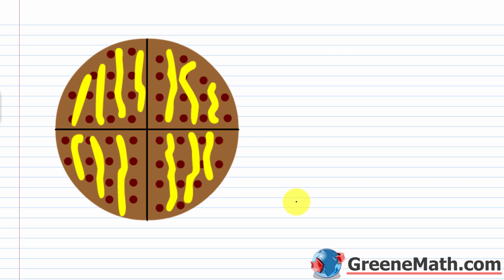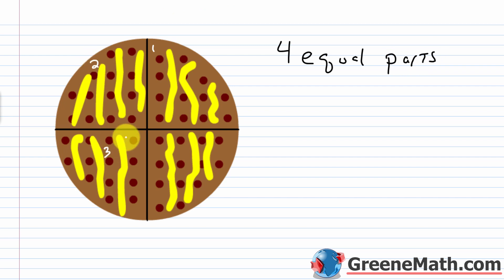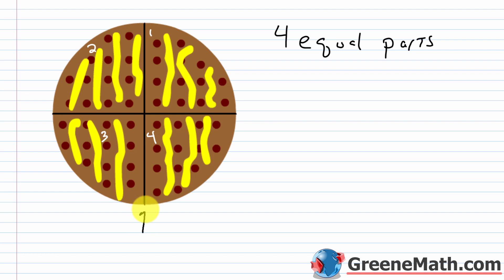The first thing I want you to notice is that the pizza is cut up into four equal parts — one, two, three, four equal parts. When we work with fractions, we have some whole amount that's cut up into equal parts. Our whole amount would just be the pizza, so one pizza is our whole amount. It's cut up into four equal parts, so if I have four parts out of four parts, I have one pizza.